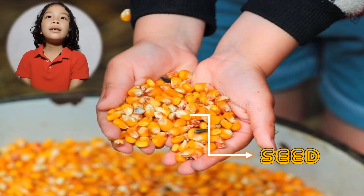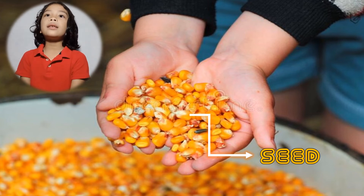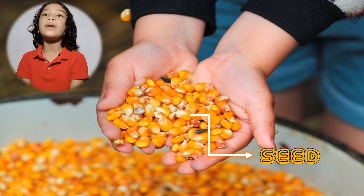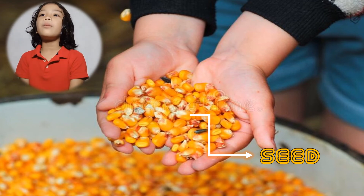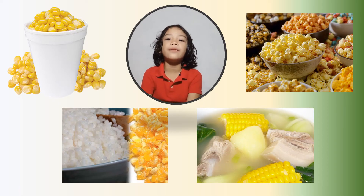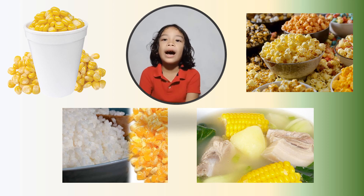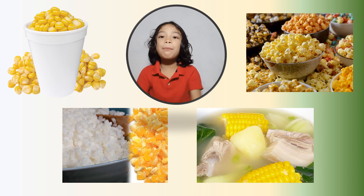A seed. A seed is the reproductive part of a plant. It is the part of a plant that we plant in the ground and from which a new plant grows. Corn seeds are very important and useful. They can be cooked, such as cheesy corn in a cup, rice, corn soup, and our favorite — popcorn.